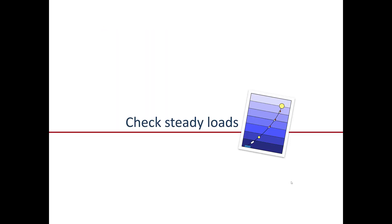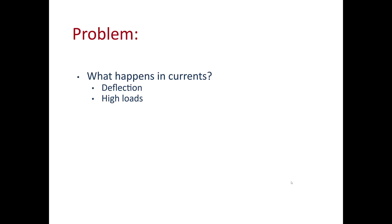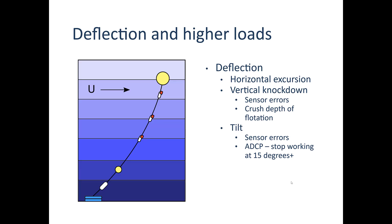After checking static weight and buoyancy loads, the next thing is checking a basic static loading scenario: steady loads from current, and sometimes wind — though wind plays a lesser role especially for subsurface mooring design. In currents, there's mooring deflection and loads increase due to drag. When we talk about deflection, we mean horizontal excursion and vertical knockdown, as these systems rotate around their anchor. The problem with vertical knockdown is that sensors may have errors, and flotation can reach crush depth.